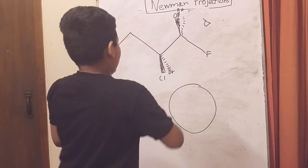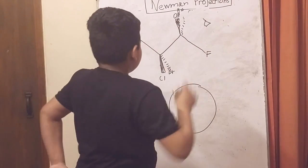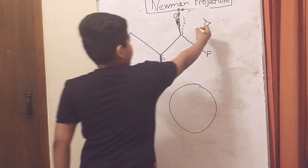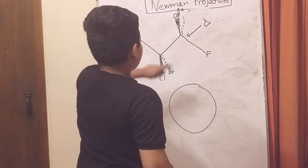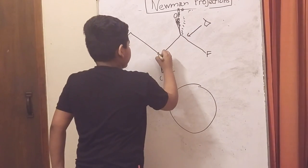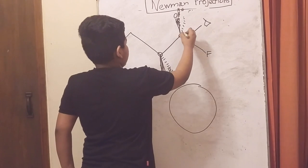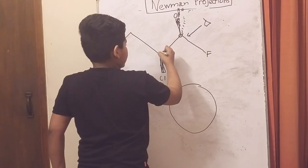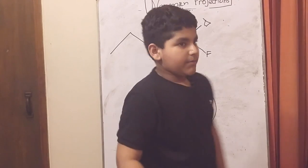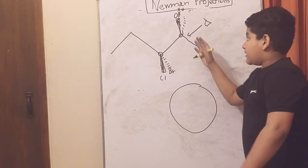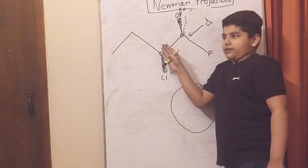We know that this is our perspective, so what we have to note is the front carbon and the back carbon. If this is the front carbon, then this part will be the back carbon because according to my perspective I can't see that carbon.